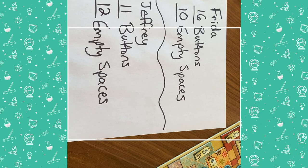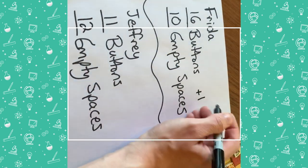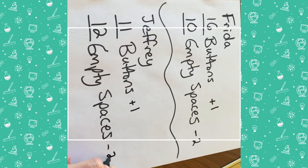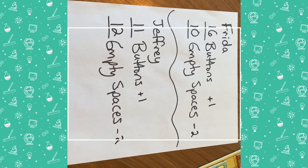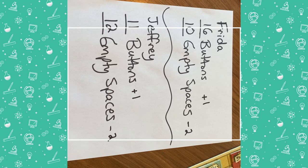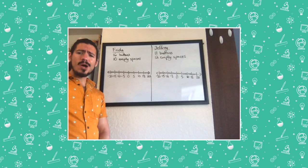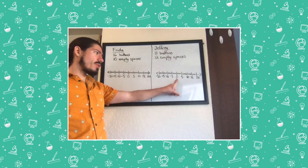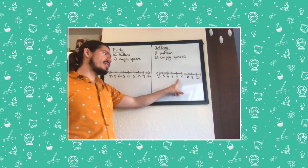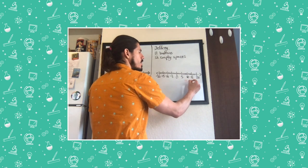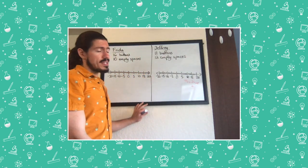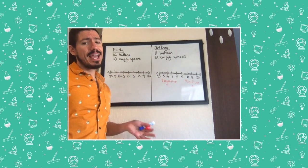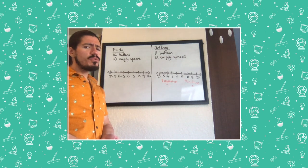Can you work out their final scores? Remember, every button is worth one point and every empty space is worth negative two points. I'll give you a moment to see if you can work out their final scores. I'm going to use some number lines to help me figure out how many points Frida got and how many points Jeffrey got. Number lines are incredibly helpful when we're thinking of negative numbers. Zero is right in the middle of all the positive and the negative numbers.